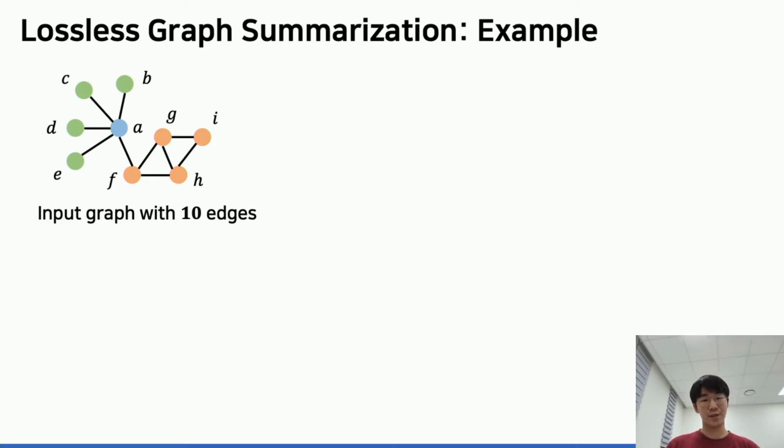What is lossless graph summarization? Here is a simple illustration for the concept. Suppose we have a toy graph like this. We need 10 edges to describe the graph. Obvious redundancy exists in relations between this single blue node and four green nodes.